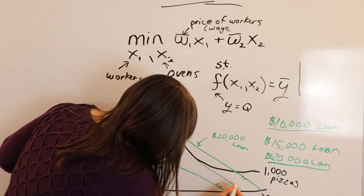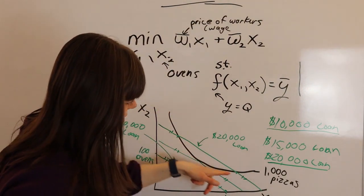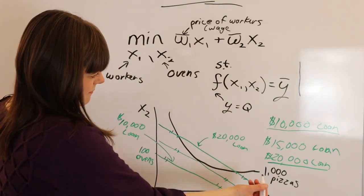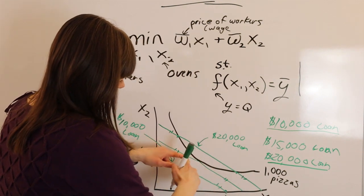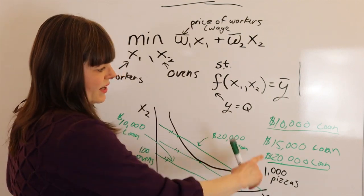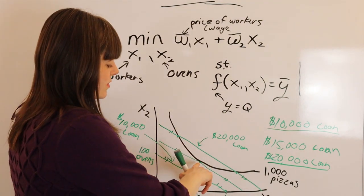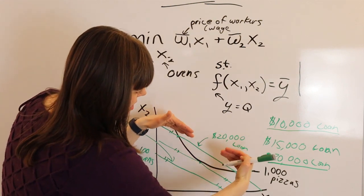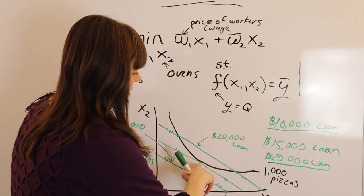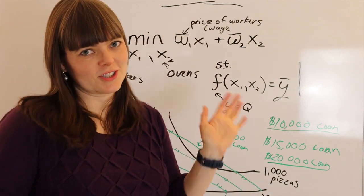We choose the isocost line — all three are parallel — that is tangent to the isoquant curve for 1,000 pizzas. It turns out that's the $15,000 loan; that's the cheapest way to produce 1,000 pizzas. With anything less we can't meet our obligations, and with more we're spending unnecessarily. We want the smallest loan amount acting like m that achieves the required output.